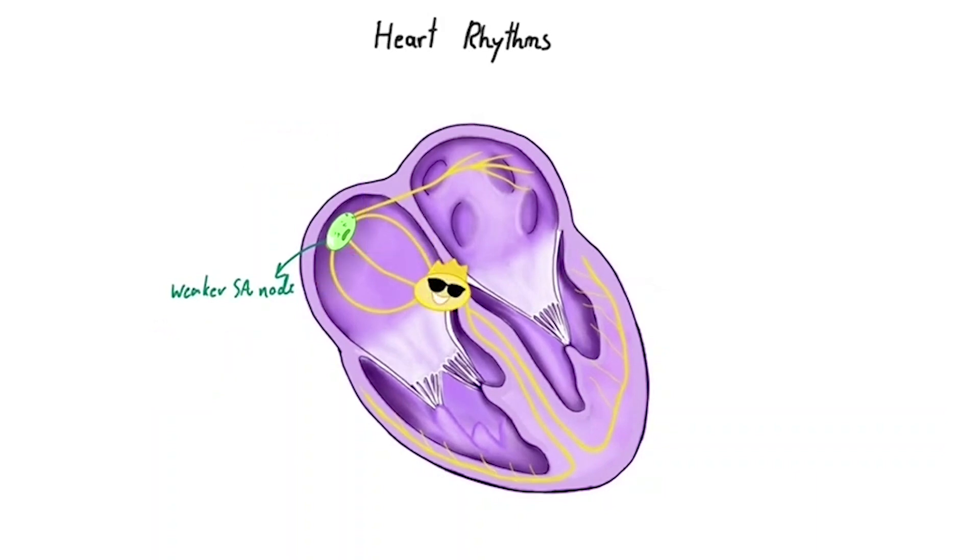If the junctional region, the AV node or His bundle takes over, then we call this a junctional rhythm. And finally, if a pacemaker focus arises within the ventricles, the result is a ventricular rhythm.